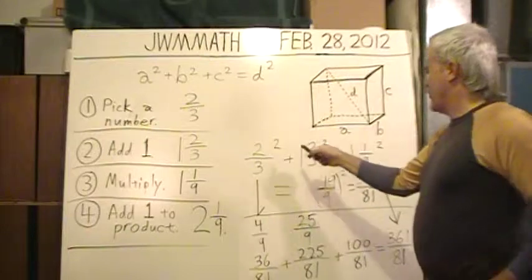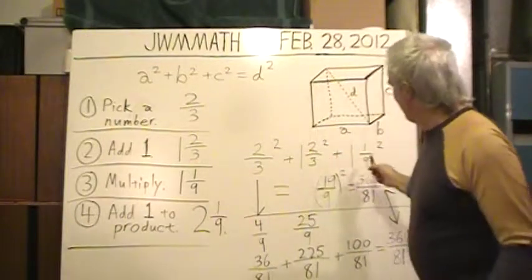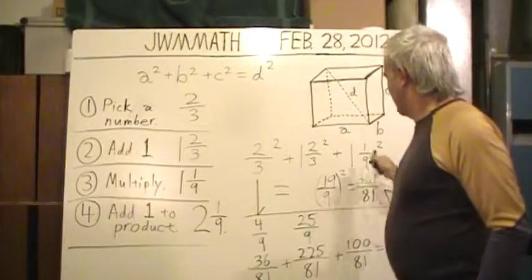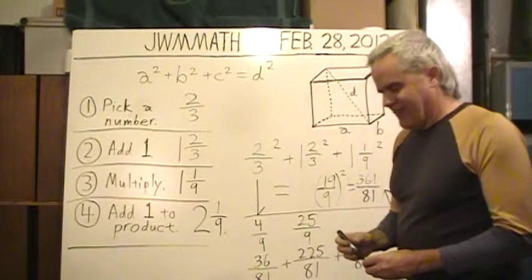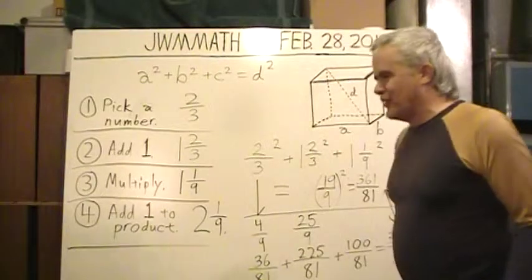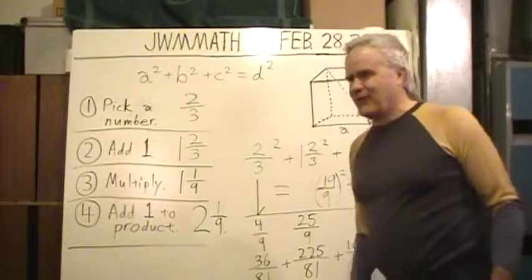Two-thirds squared plus one and two-thirds squared plus one and one-ninth squared equals two and one-ninths squared. And I was starting to stumble my tongue a bit because I just enjoy this stuff so much, with these squares and these fractions. And thanks for watching.